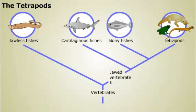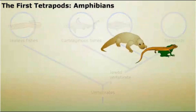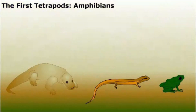Early amphibians and all their evolutionary descendants are known as tetrapods. This word means four feet, a trait of most modern land vertebrates. The first fossil amphibians date to the late Devonian period, over 350 million years ago.